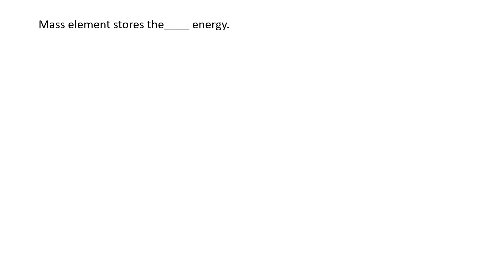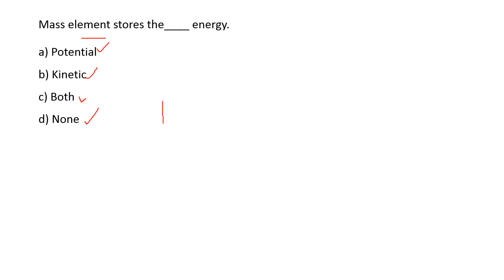Next: the mass element stores what type of energy? Options are: potential energy, kinetic energy, both potential and kinetic, none of the above. Mass is one of the basic elements in a translational mechanical system. The mass element stores kinetic energy. So option B is the right answer.